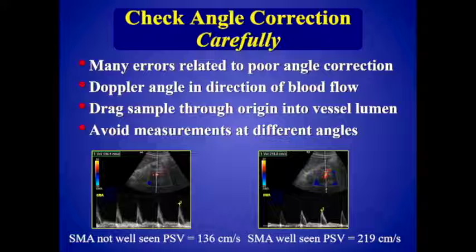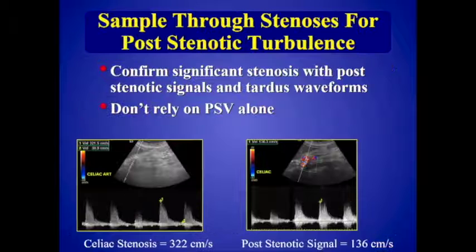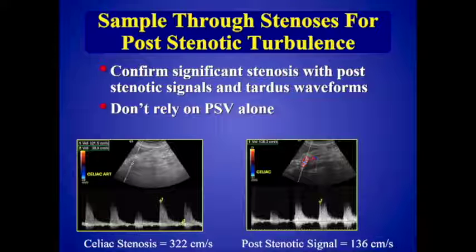Here's an example: when the SMA is not well seen, the velocity measures 136 cm/s, but when you extend the vessel and see the longer course, the velocity is really 219 cm/s. Always sample through the stenosis to look for post-stenotic turbulence. In this example, the celiac velocity is elevated, and as you move through it, you get that post-stenotic signal — velocity drops, bidirectional flow, a very shaggy waveform — confirming it's a flow-reducing lesion.